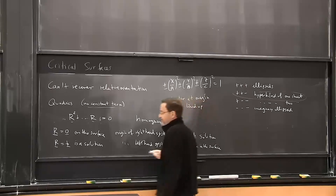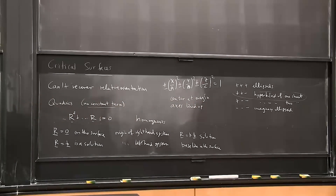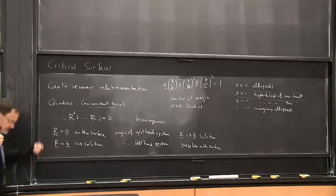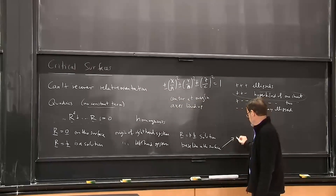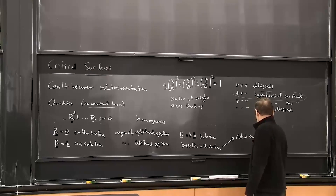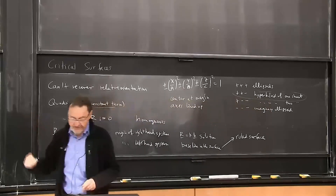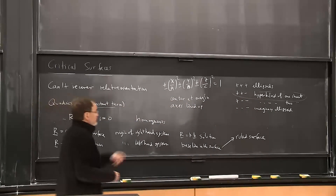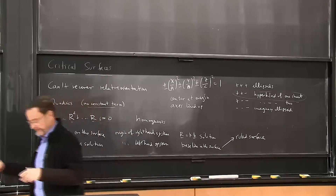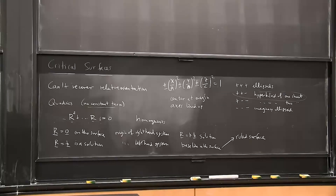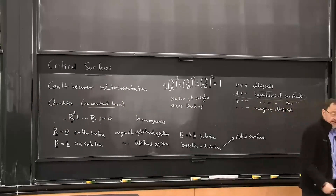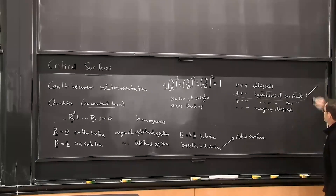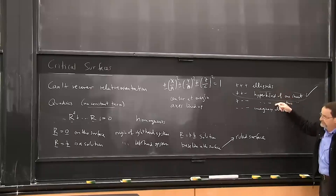This has several implications. One is that it seems like a rare case — how likely is it that you're on the surface with both camera positions and the whole baseline between them? The other implication is that it's a ruled surface: we can draw lines in the surface, which we can't do with an ellipsoid. So without doing all the detailed algebra, it has to be the hyperboloid of one sheet, since neither the ellipsoid nor the hyperboloid of two sheets is ruled.